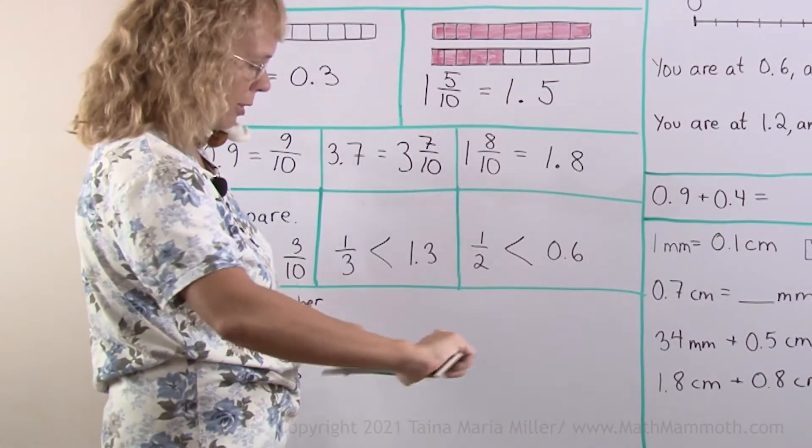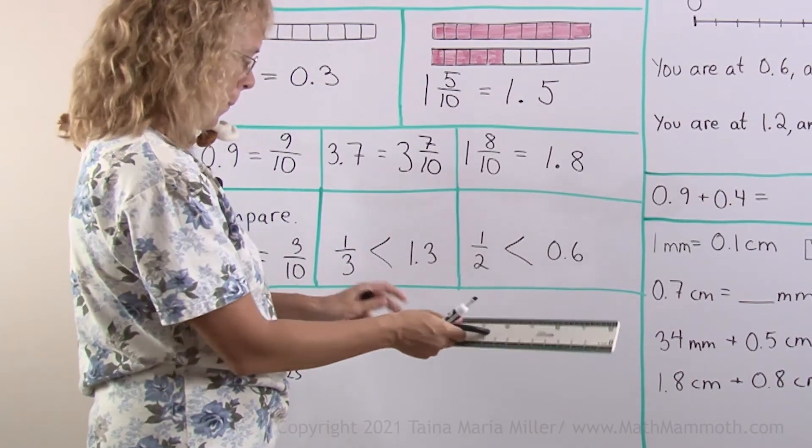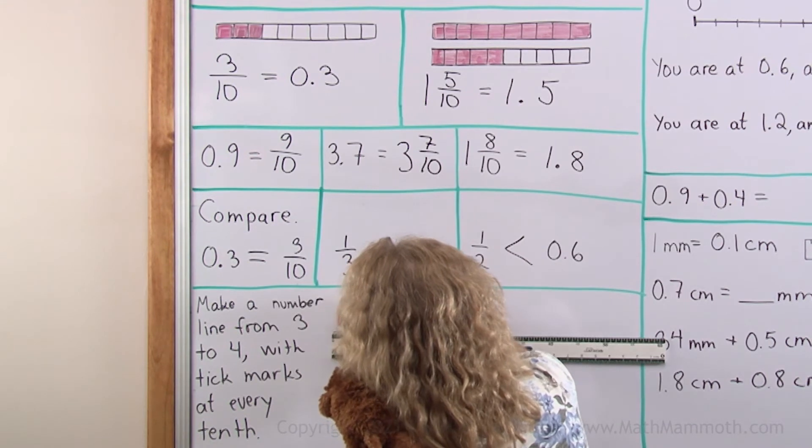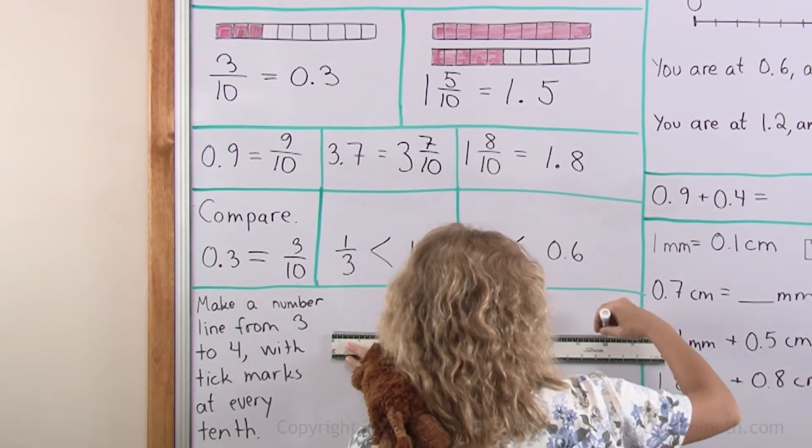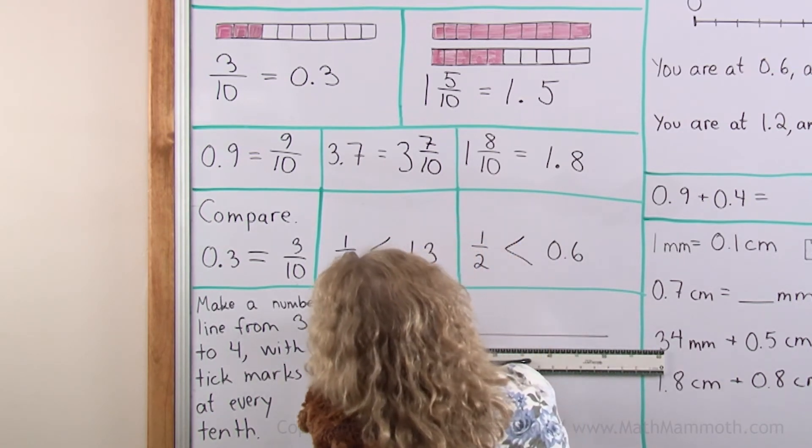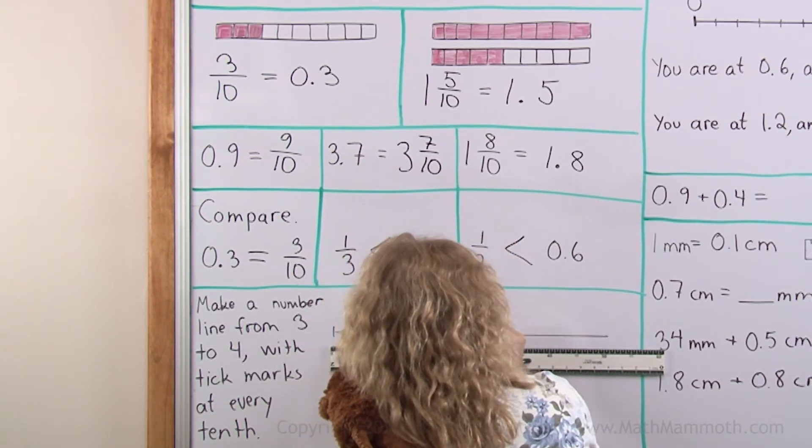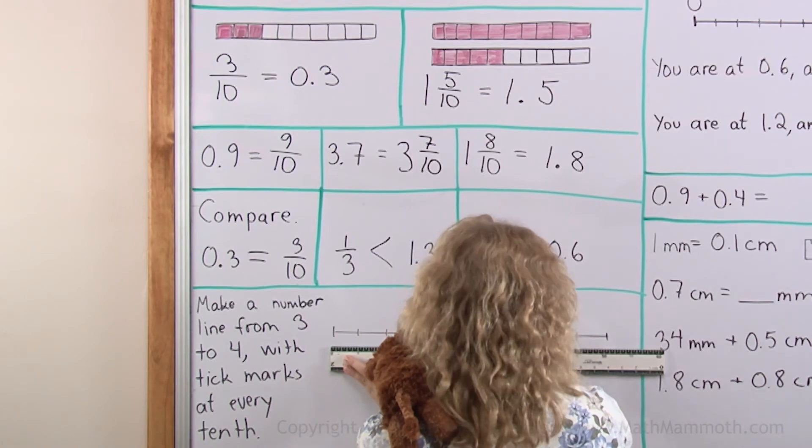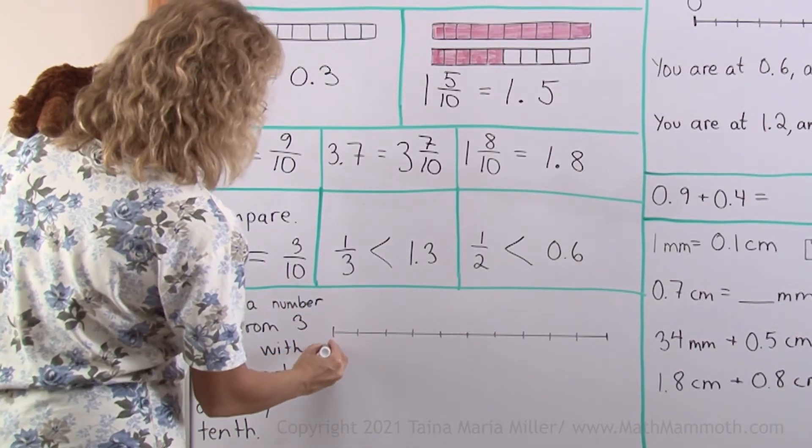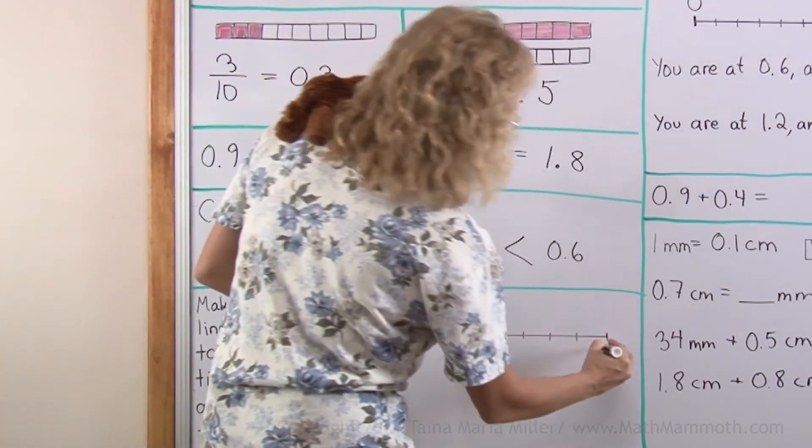Here's my ruler. I'll draw a line and then I need to divide it into 10 parts, which for me means every 5 centimeters. There. And now this is 3, this is 4.